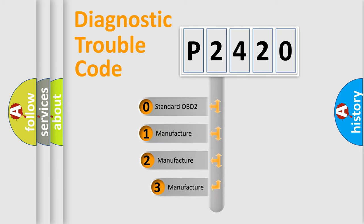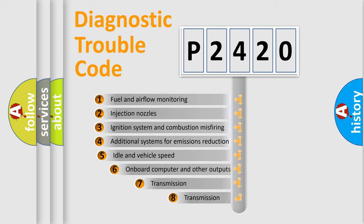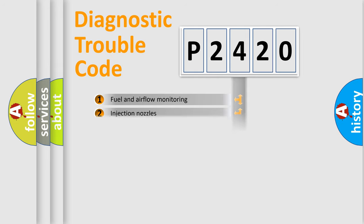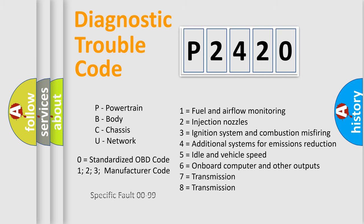If the second character is expressed as zero, it is a standardized error. In the case of numbers 1, 2, 3 it is a manufacturer-specific error. The third character specifies a subset of errors. The distribution shown is valid only for the standardized DTC code. Only the last two characters define the specific fault of the group. Let's not forget that such a division is valid only if the other character code is expressed by the number zero.